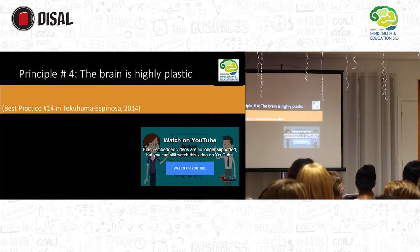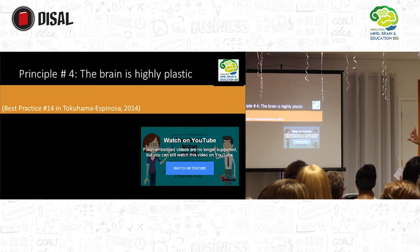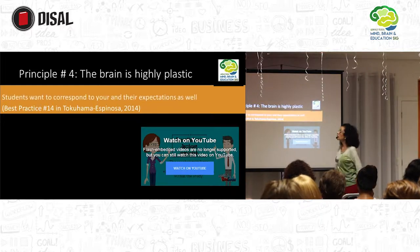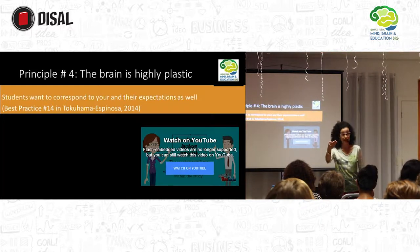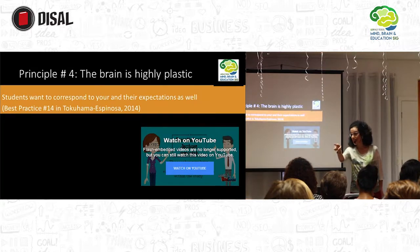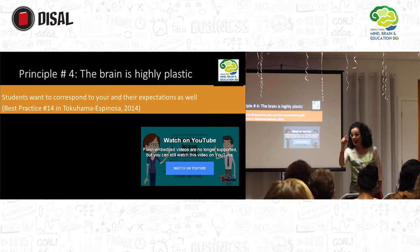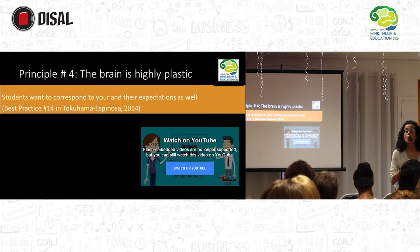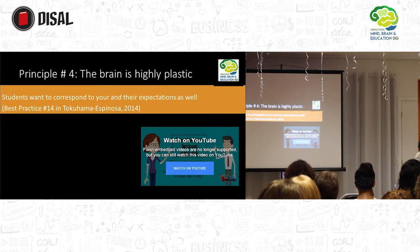An ability is something I have to acquire — the ability to ride a bicycle, to swim — I have to engage, make some effort. Plasticity? No. Plasticity comes with me. I use it for good things, I use it for bad things. So the brain is highly plastic. What can we do to capitalize on that? Students want to correspond to your expectations and their own expectations as well. This is part of the mechanisms embedded in us — we are social human beings, we need each other.